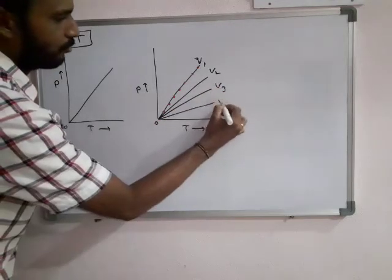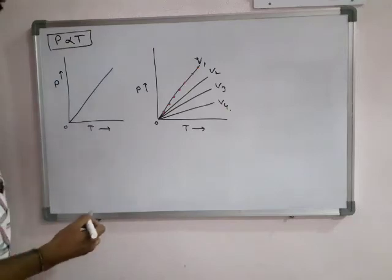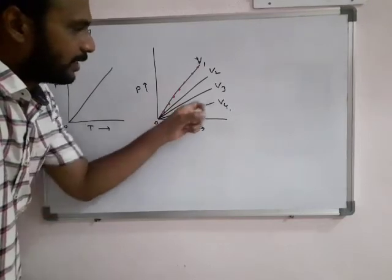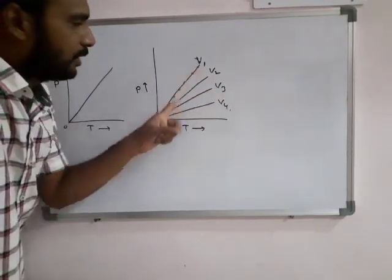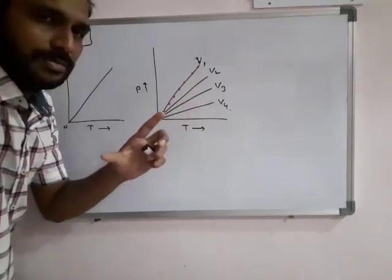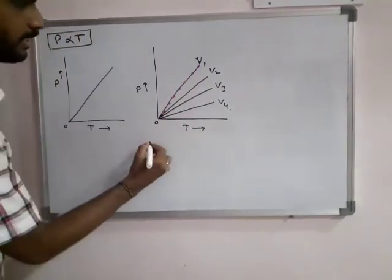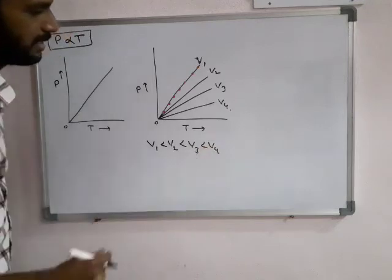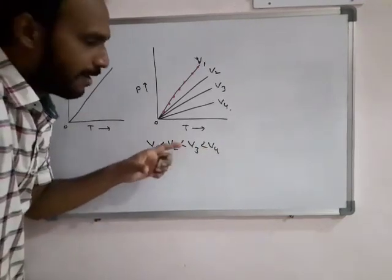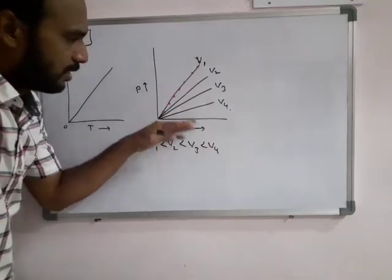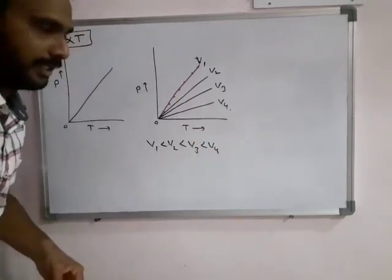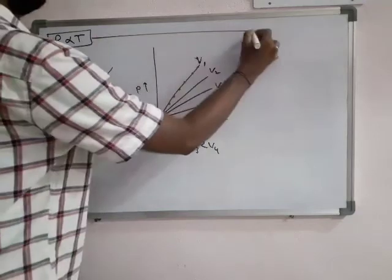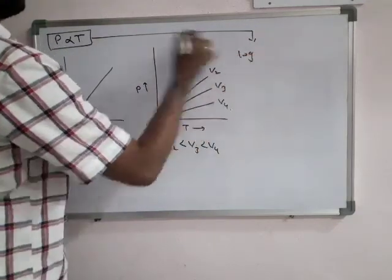Similarly for V3 and V4. The relation between V1, V2, V3, V4 is that as the constant volume increases, the curve value shifts downward. So we have V1 is less than V2 is less than V3 is less than V4. As the constant volume increases, the graph line comes down towards the x-axis.